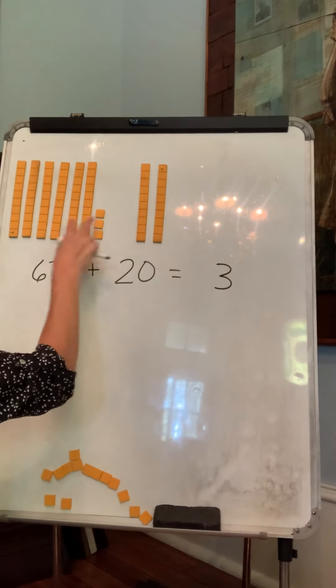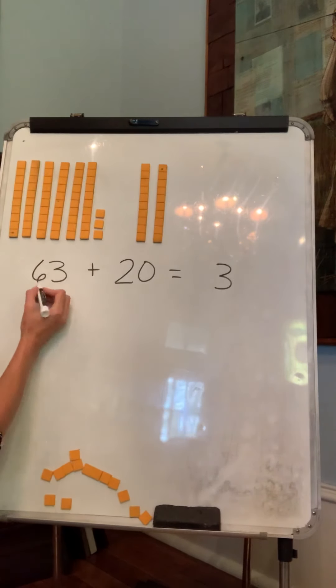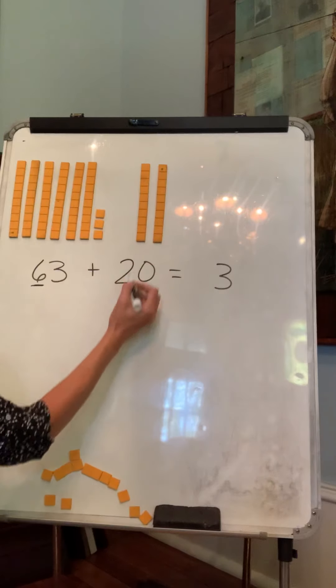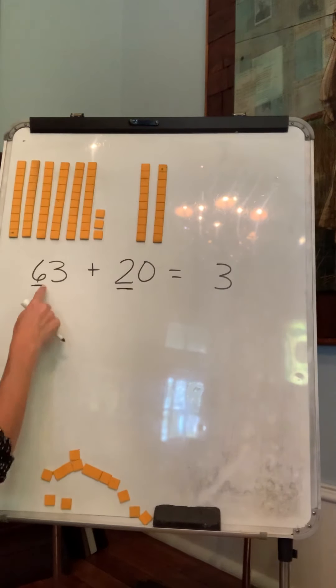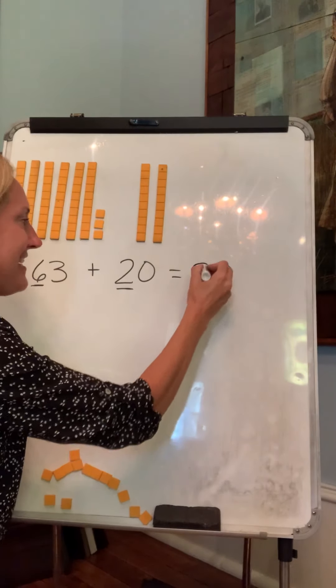And then how many tens do I have? Well, we're just looking at the tens. I have six over here, six tens. Over here, I have two tens. What is six plus two? We just did that. Eight tens.